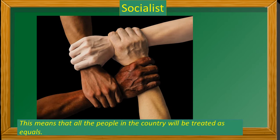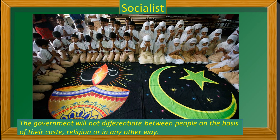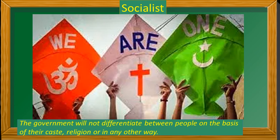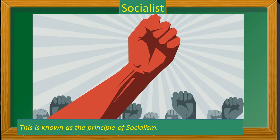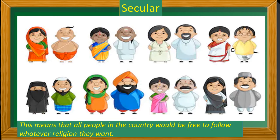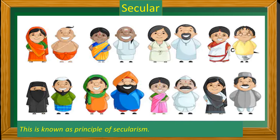Socialist — this means that all the people in the country will be treated as equals. The government will not differentiate between people on the basis of their caste, religion, or in any other way. This is known as the principle of socialism. Secular — this means that all people in the country would be free to follow whatever religion they want. This is known as the principle of secularism.